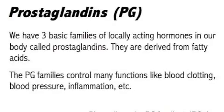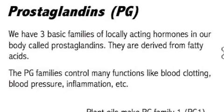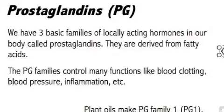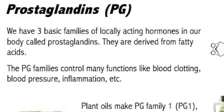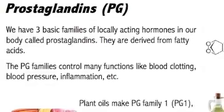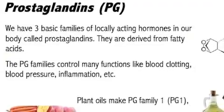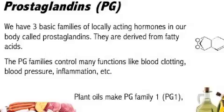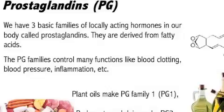Let's go a little deeper on that. Prostaglandins are chemicals that our cells make. They influence other cells' functions on a local level — they are kind of like hormones, but they don't go into the bloodstream and get circulated through the whole body; they just act locally in the neighborhood. We have three basic families of them, and they are derived from fatty acids. Prostaglandin families control many functions like blood clotting, blood pressure, and inflammation.